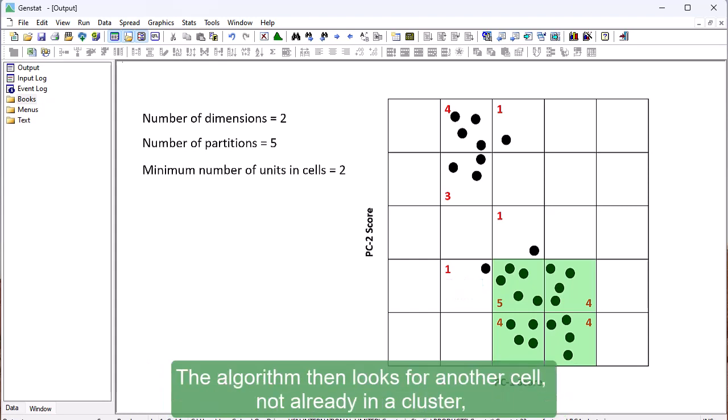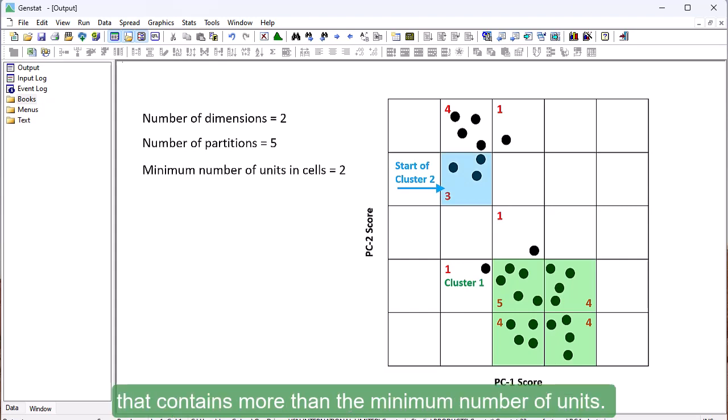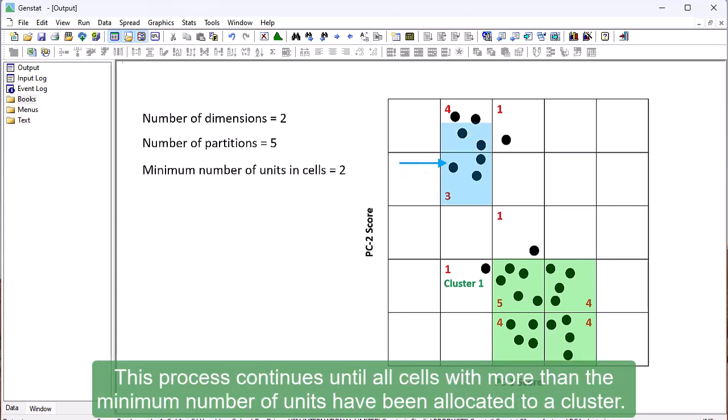The cluster is complete when no neighbouring cells around any cell already in the cluster have more units than this minimum number. The algorithm then looks for another cell not already in a cluster that contains more than the minimum number of units. This provides the starting point for another cluster.